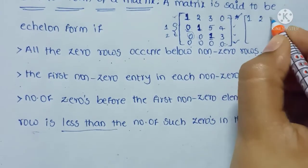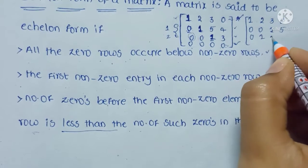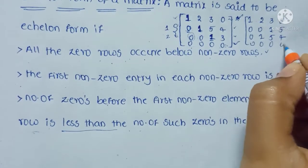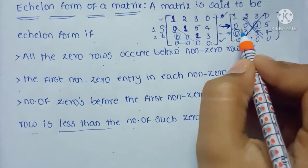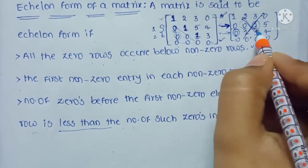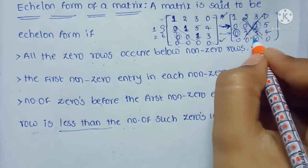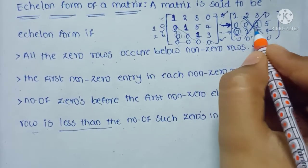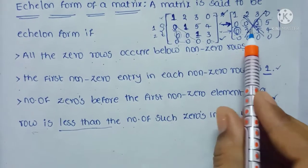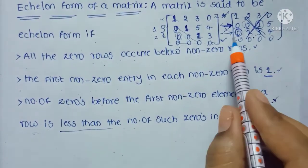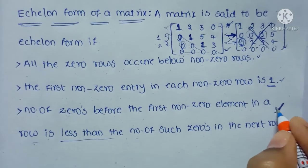If you write a matrix like: 1, 2, 3, 0, 0, 0, 0, 1, 5, 0, 0, 1, 5, 4, 0, 0, 0, 0 — then it is not said to be an echelon form. Because in row 2, we have 2 zeros before the non-zero element, and in row 3 we have 1 zero before the non-zero element. That is, the number of zeros before the non-zero element in a row is greater than the number of such zeros in the next row. So it is not said to be an echelon form of a matrix. This is the third condition.